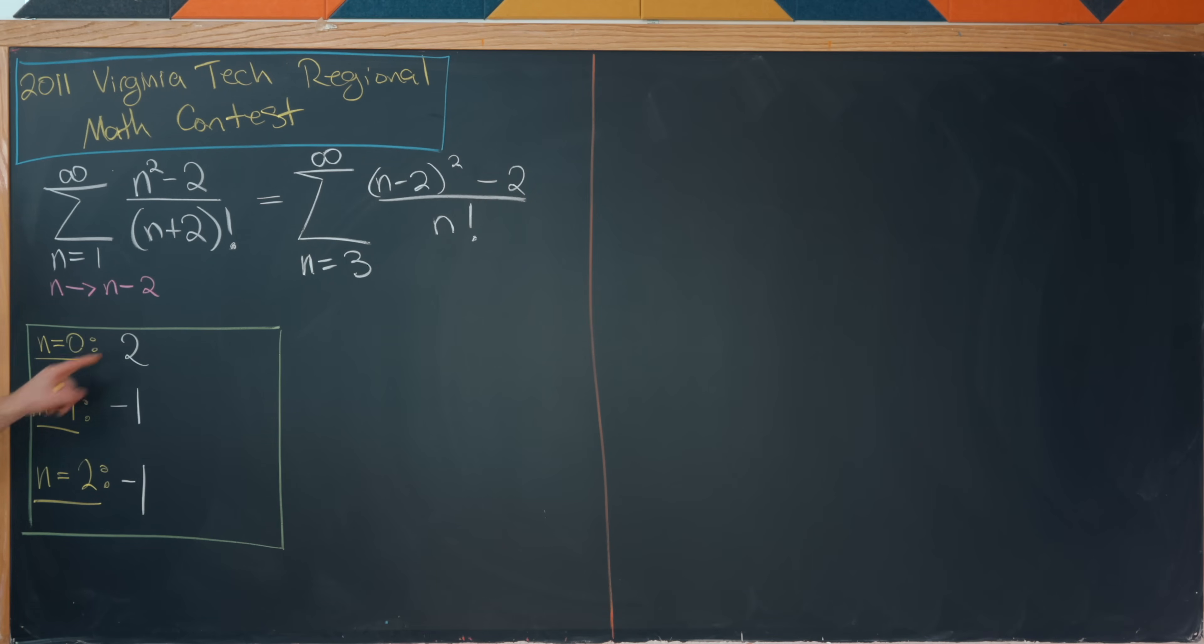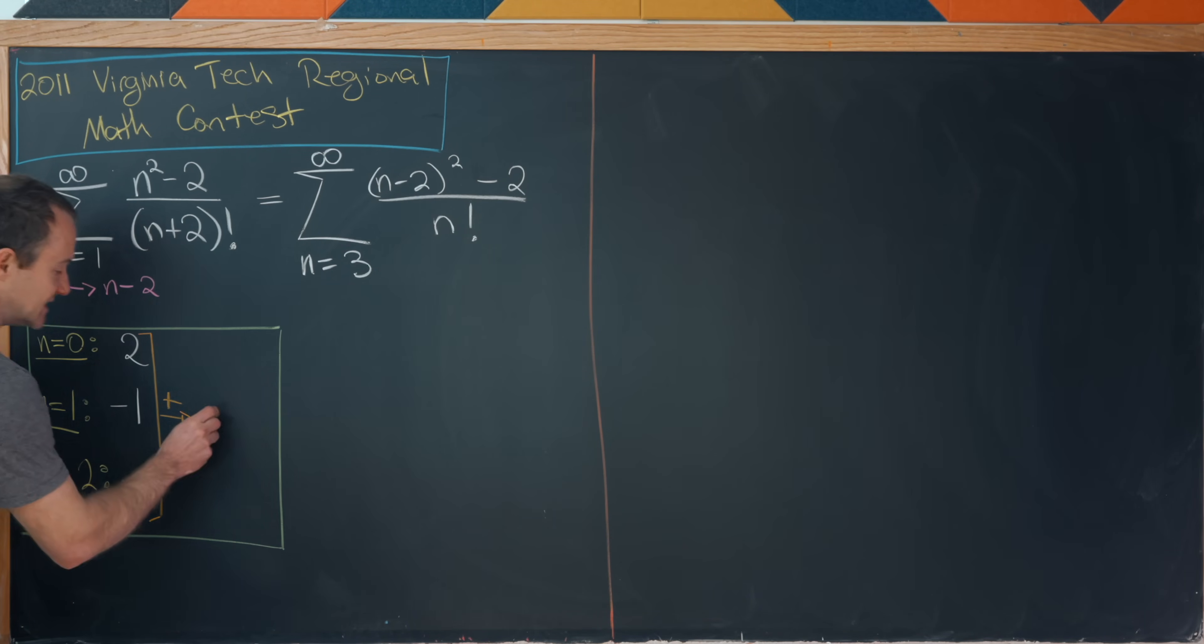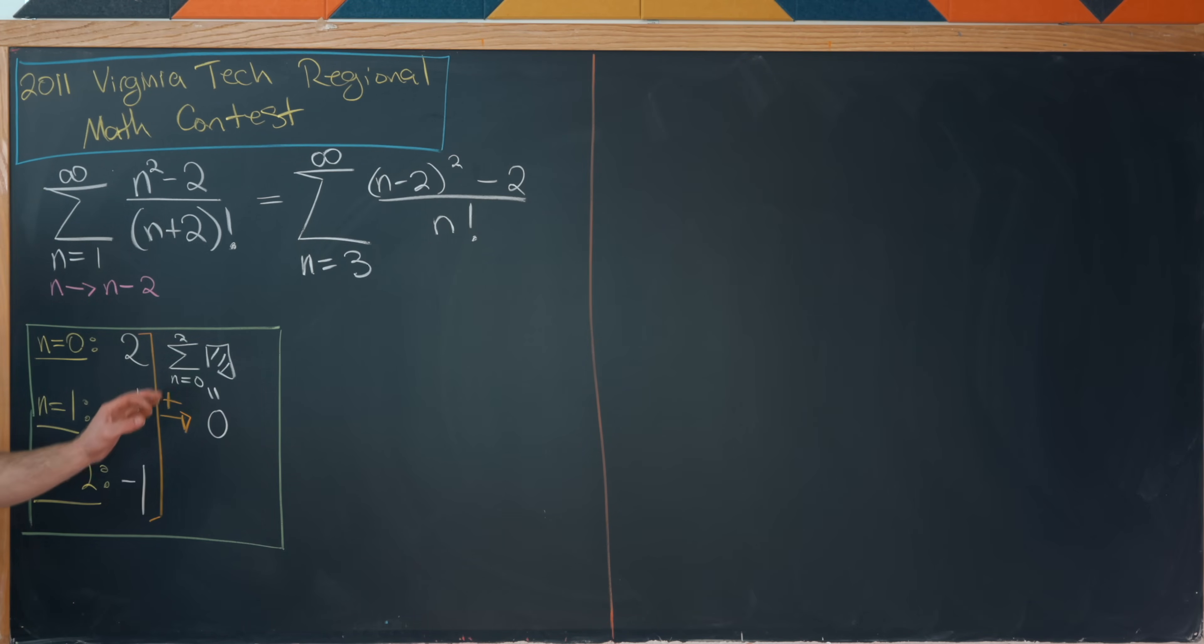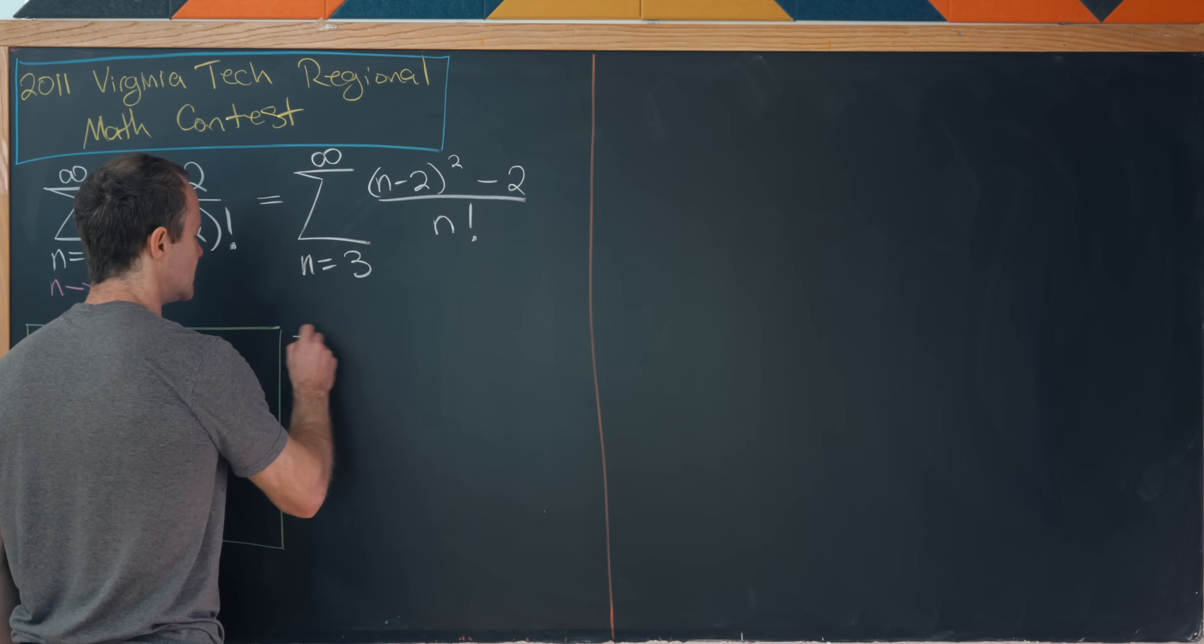Okay, so the zeroth term is two, the first term is negative one, and the second term is also negative one. But I think you can probably see what's going on here. If we add these three terms, we just get zero. So that means that we have the sum as n equals zero to two of this stuff simply equals zero. So that means we can add that first three terms in for free without any trouble at all. So let's do that.